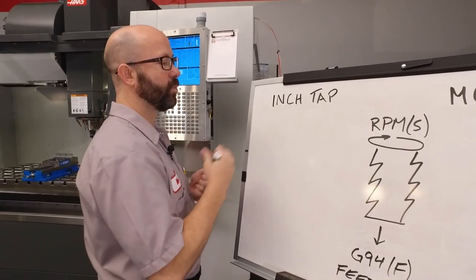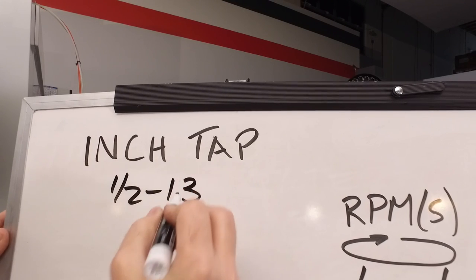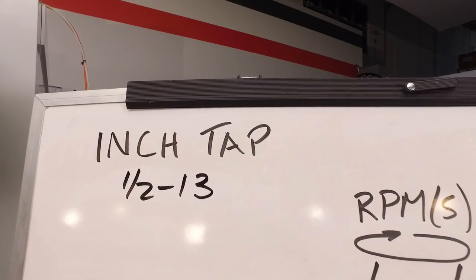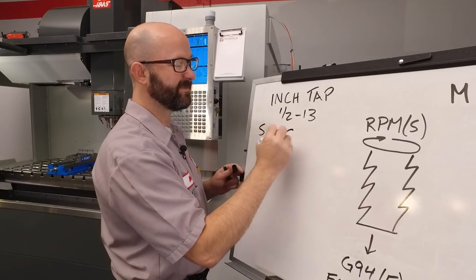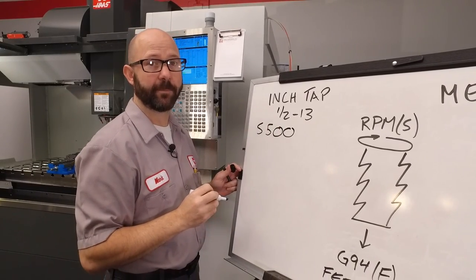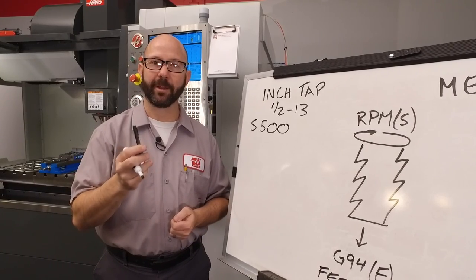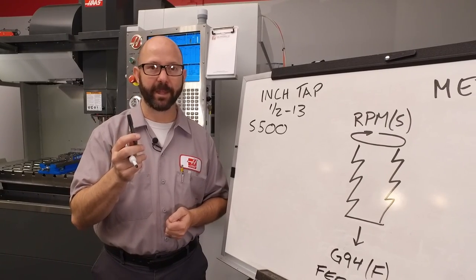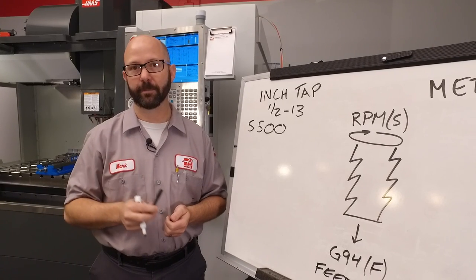Now for this example, we're going to use a half 13 cutting tap. The first piece in our puzzle is our RPM. We're going to go with 500 RPM for this example. For your real tap, you're going to have to get with your tap supplier and find out what speed they recommend based on your tap style, the coating on your tap, and the material being cut.